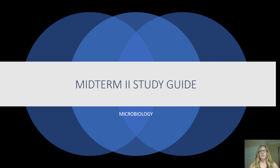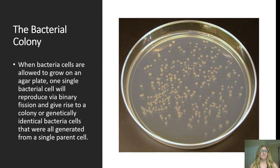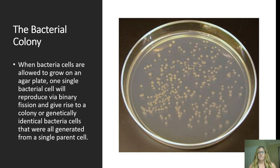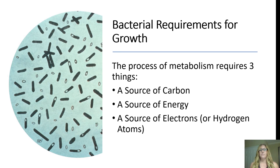This is your midterm study guide for microbiology. The bacterial colony: when bacteria cells are grown in a petri dish like the one shown here, they are grown on agar. One single bacteria cell will reproduce using binary fission and will give rise to an entire colony. A colony is made up of genetically identical bacteria cells that are all generated from a single parent cell.